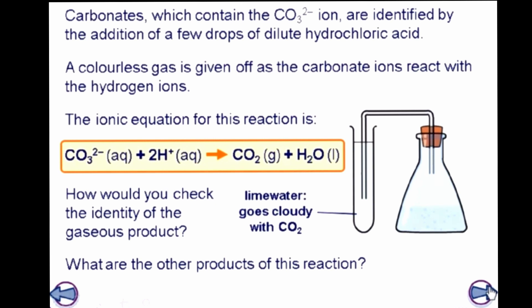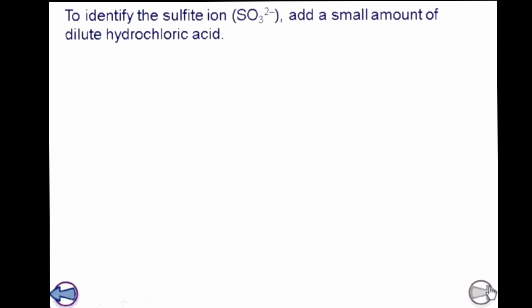Now let's go to the next ion. Be very sure of all these tests. The positive ions are not so difficult because color is there. We use NaOH — maybe a little difficult for aluminium and zinc — but others are very clear. When you do the labs it becomes easy because you see it. Aluminium also becomes easy with revision.